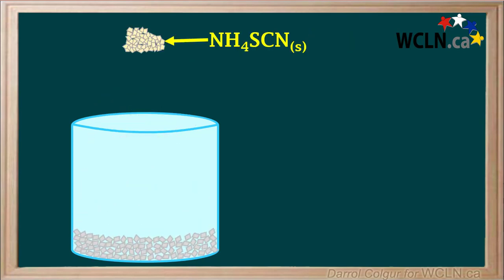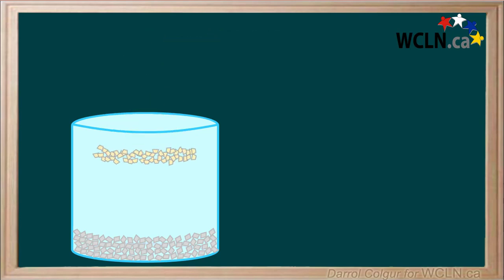Next we'll add some solid ammonium thiocyanate to the beaker, so we have a mixture of the two solids.